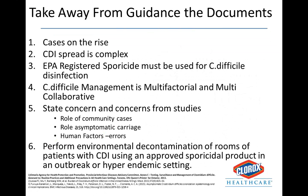Key takeaways from existing guidance documents include: cases are on the rise, C. difficile spread is complex, you need an EPA-registered sporicide in cases where you have a C. difficile disinfection need, and C. difficile management is multifactorial. There's also concern around community cases, the role of asymptomatic carriage, human factors related to possible errors, and the need to perform environmental decontamination of rooms of C. difficile patients with an approved sporicidal agent, especially in an outbreak or hyperendemic setting.